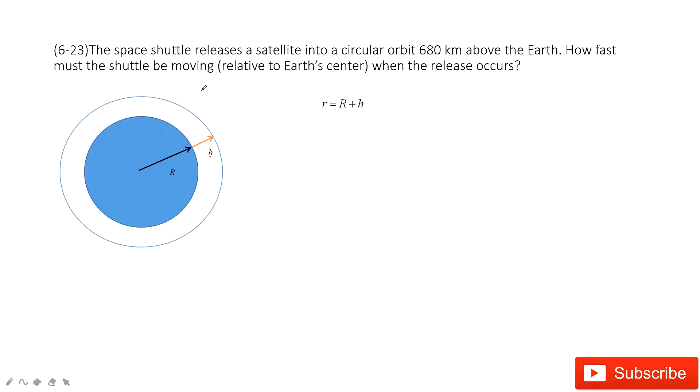The next one asks you how fast must the shuttle be moving when the release occurs. So that means we need to find the velocity at this circular motion.